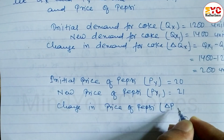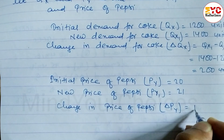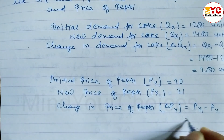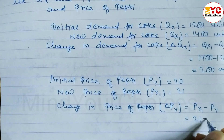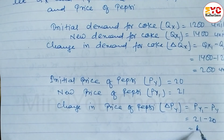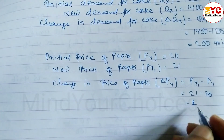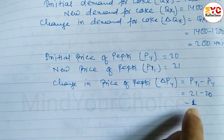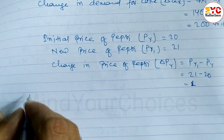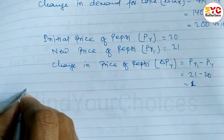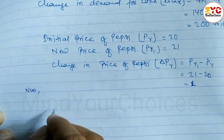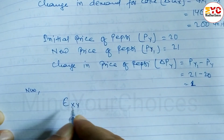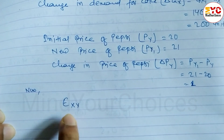Delta P Y equals P Y1 minus P Y, which is 21 minus 20, equal to 1. So the price of Pepsi changed by rupees 1. Now we can write the formula to find out the cross elasticity of demand.